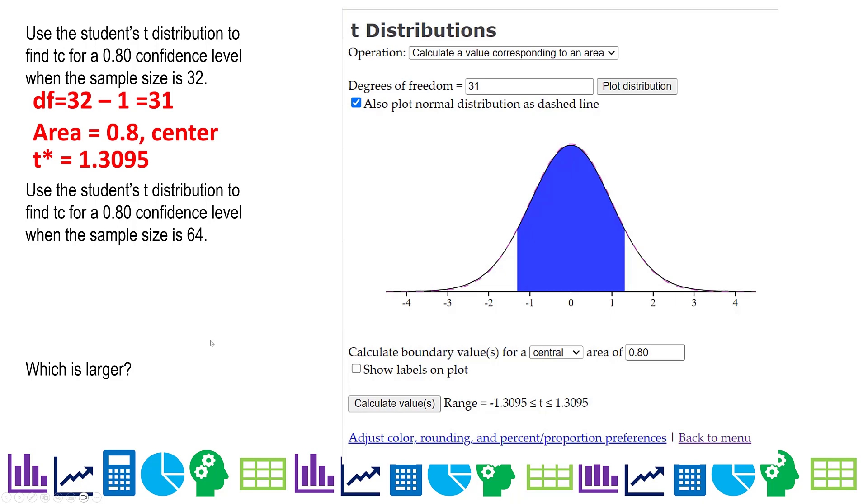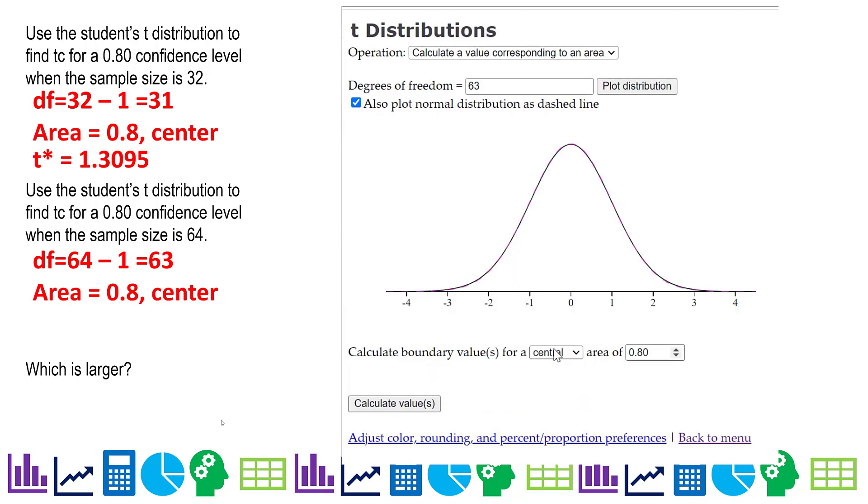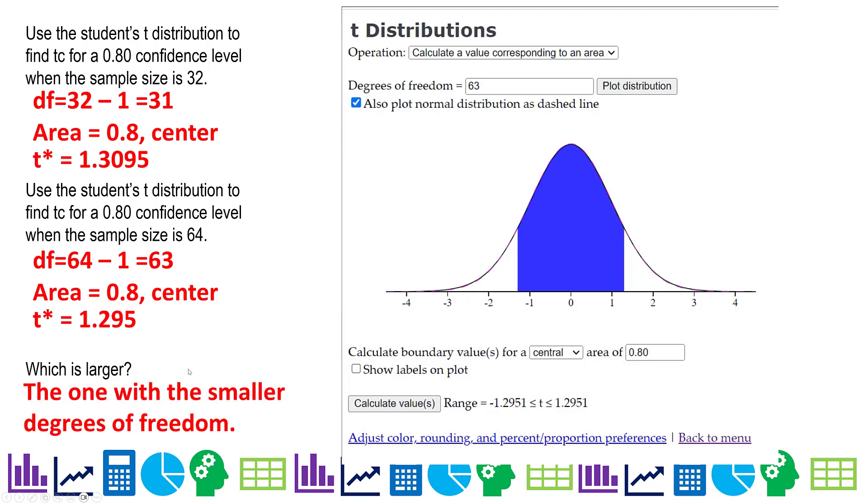So now we'll calculate it for a larger sample size. First, our degrees of freedom is 64 minus one, so it's 63. Area is still 0.8, and it's still centered. Our sample size was 64, so we're going to use 63. Area is always central, and we're still using an 80% confidence interval. And there is your critical value, 1.2951. So which is larger? The one with smaller degrees of freedom, because we have more variability, less certainty, with a smaller sample size.